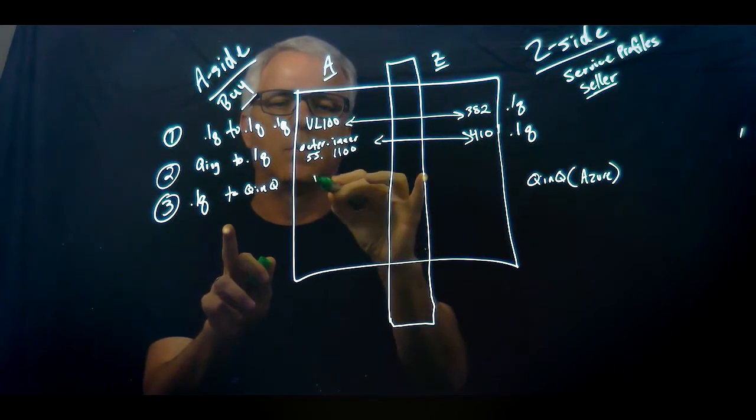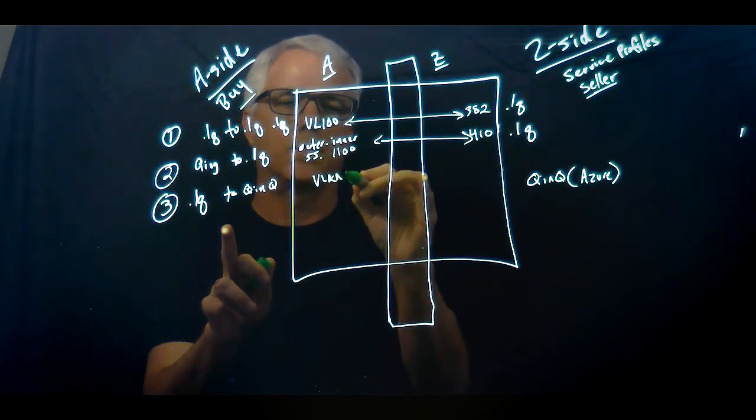So in this side, I've got .1Q, so I have a VLAN ID of 200 that comes in.